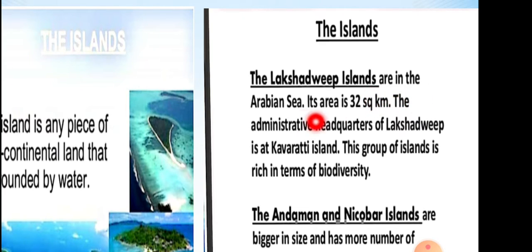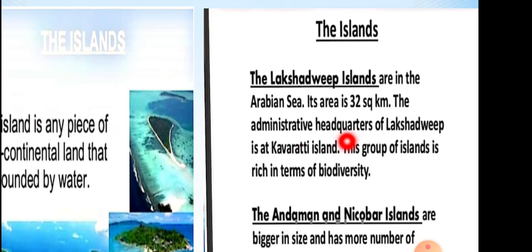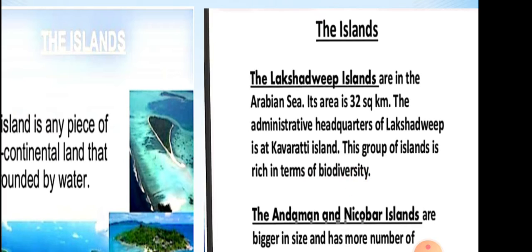Lakshadweep islands are located in the Arabian Sea. Their area is 32 square kilometers. The administrative headquarter of Lakshadweep is at Kavaratti island. This group of islands is rich in terms of biodiversity. Lakshadweep island lies along the Malabar coast.